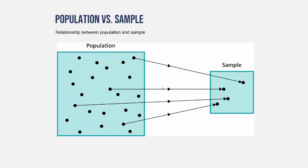Here's another example. Suppose you have a town and all these dots represent individuals, and you wanted to estimate the average height of people in the town. If you were to take all the people in the town, record their heights, and calculate the average, that would be a parameter. But if instead you randomly select just these four individuals — because this is a subset of the population, it's called a sample — and you calculate the average height of these individuals, that would be a statistic.